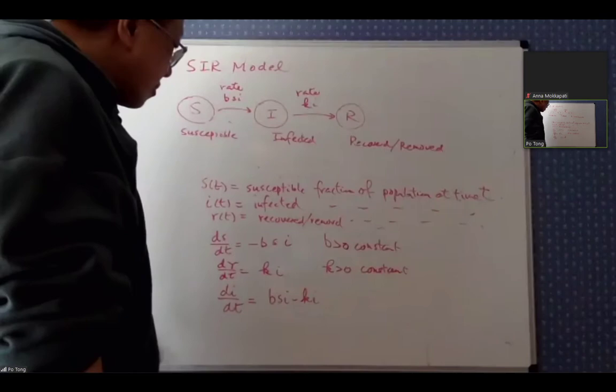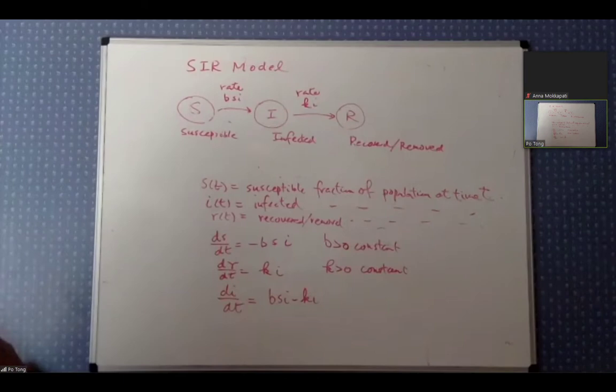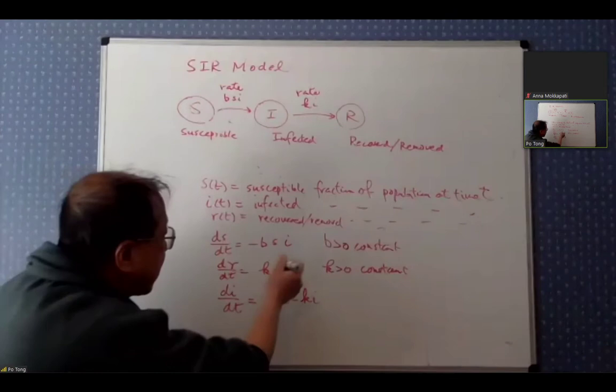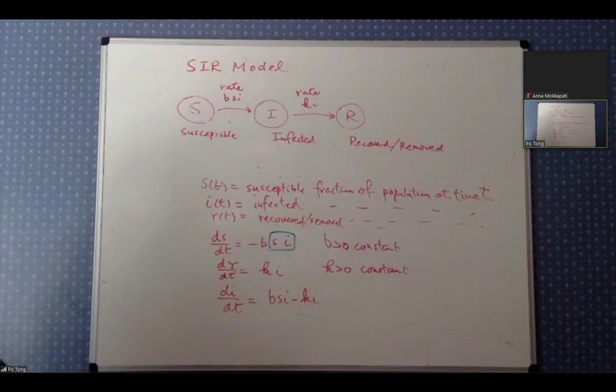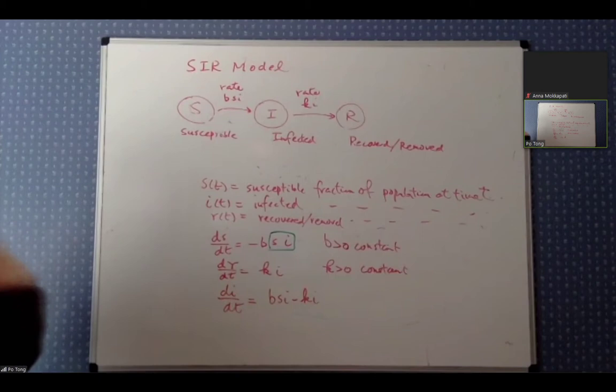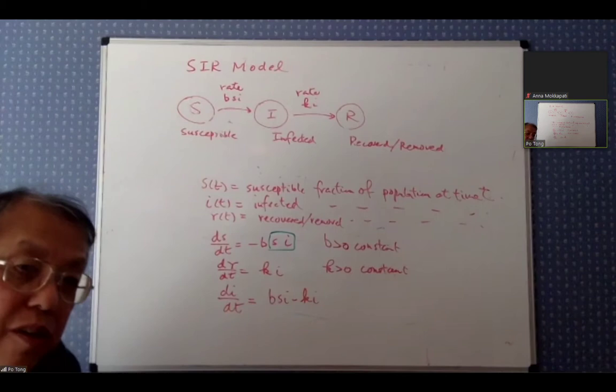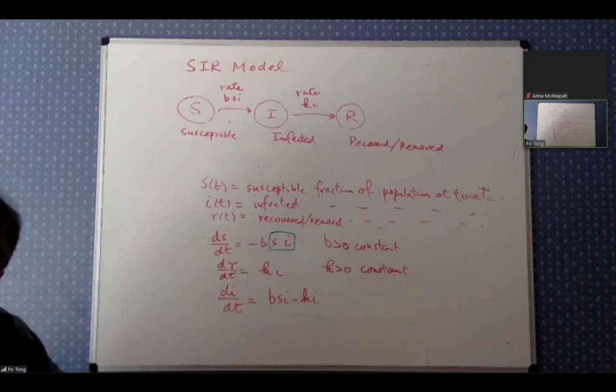It turns out these three equations are nonlinear because of the term s·i. Because of s·i, it's nonlinear, and because it's nonlinear it's not easy to solve analytically. The way people solve it is using numerical methods — similar to Euler's method, but extended to a system of equations. Of course Euler's method is a bit simplistic, so people usually use something like Runge-Kutta 4th order.